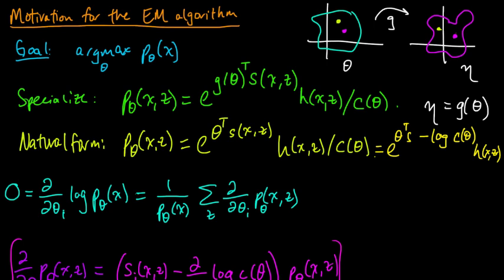We're talking about the expectation maximization algorithm, and we're trying to get an intuitive explanation for why the EM algorithm makes sense. We started out with the goal of maximizing this probability, trying to get a maximum likelihood estimate of theta. We specialized to the case of an exponential family in natural form, and we did the usual calculus thing — setting the derivative of the log equal to zero, looking for a critical point.